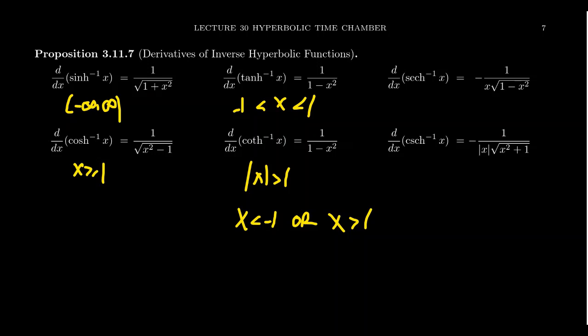The derivative of the inverse hyperbolic secant function is going to be negative 1 over x times the square root of 1 minus x squared. The derivative of the inverse of hyperbolic cosecant is going to equal negative 1 over the absolute value of x times the square root of x squared plus 1. The formulas are very similar, but remember the domains. The domain of the inverse hyperbolic secant is the absolute value of x greater than 1, just like the inverse hyperbolic cotangent. The domain of the inverse of hyperbolic cosecant is everything except 0. With those domain exceptions, we get these formulas for their derivatives.